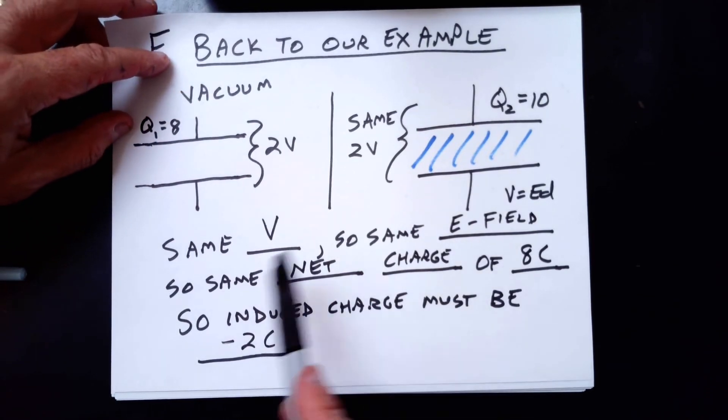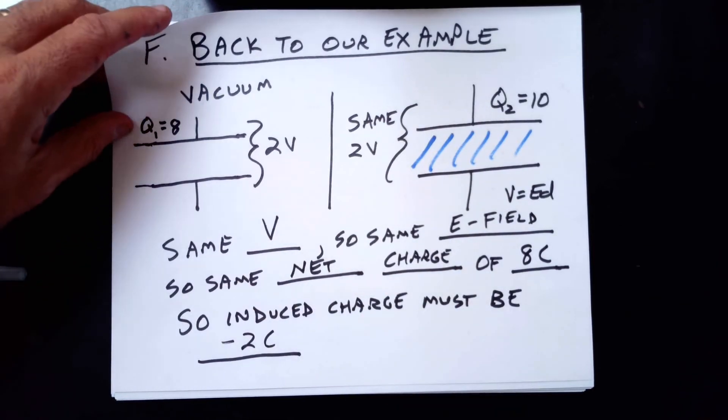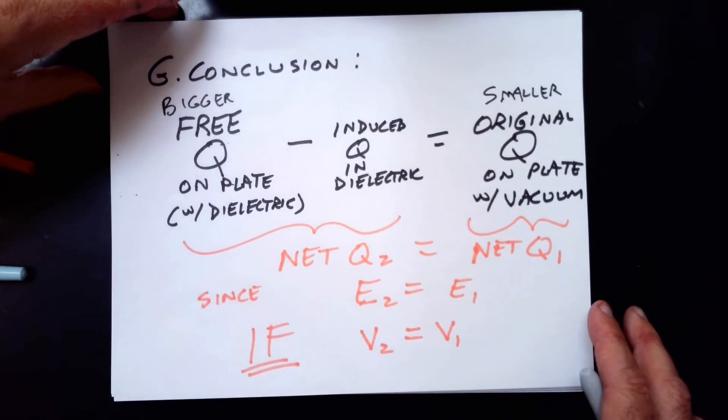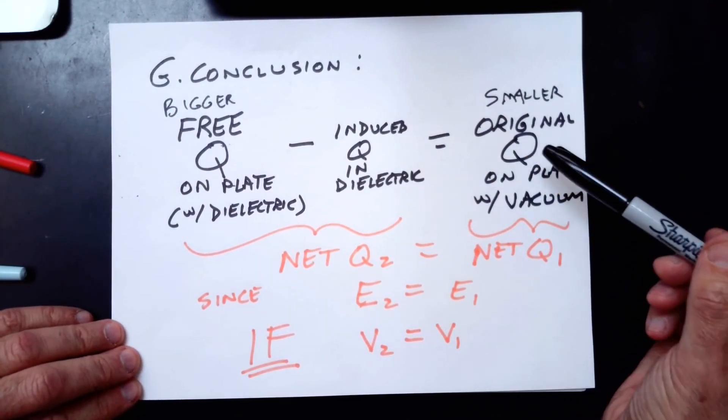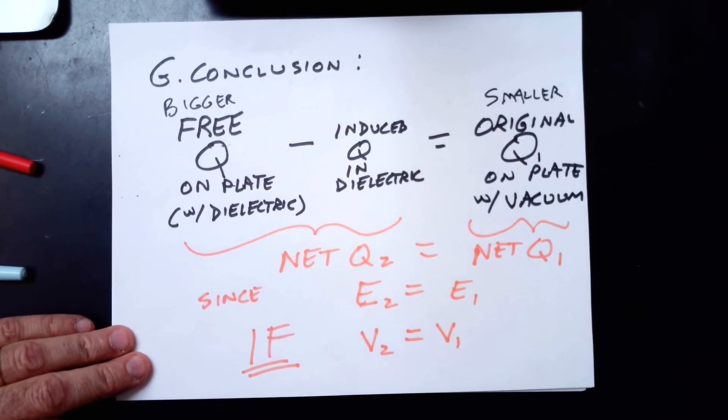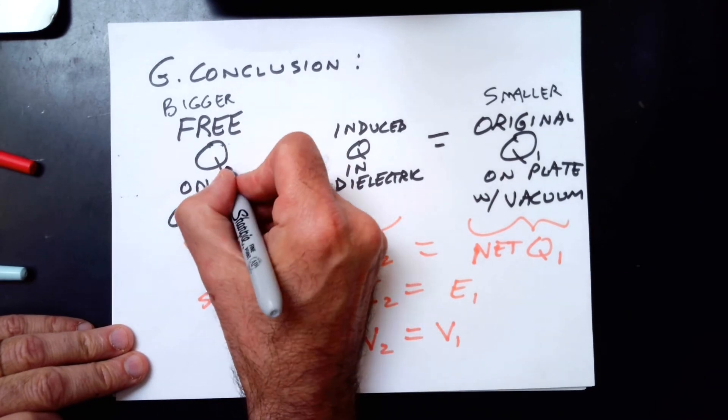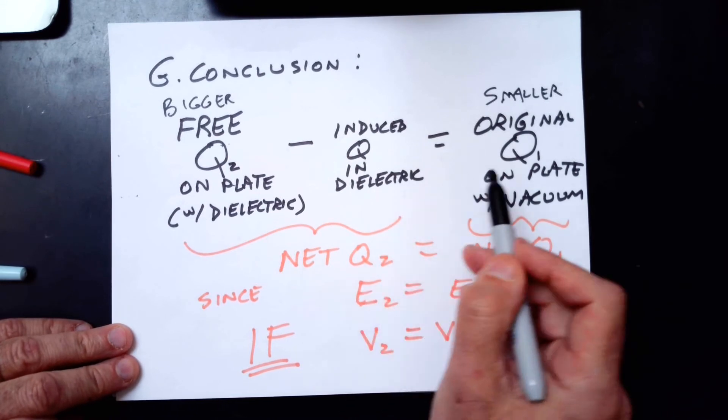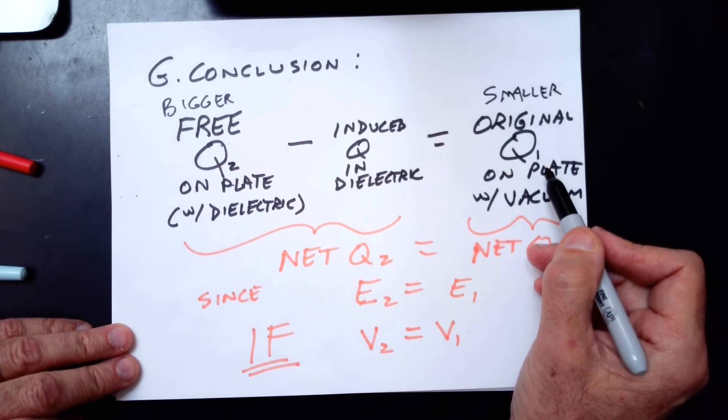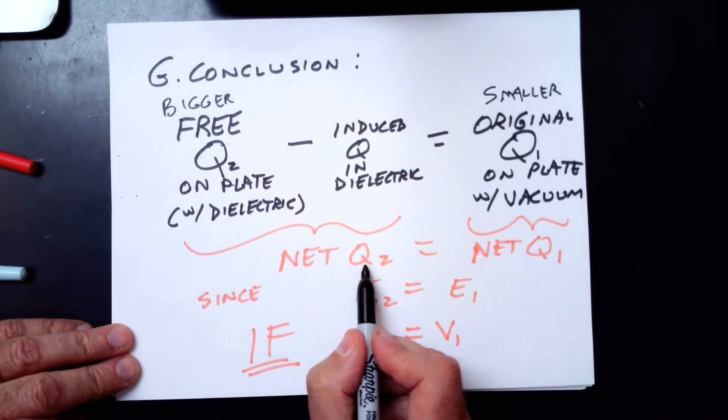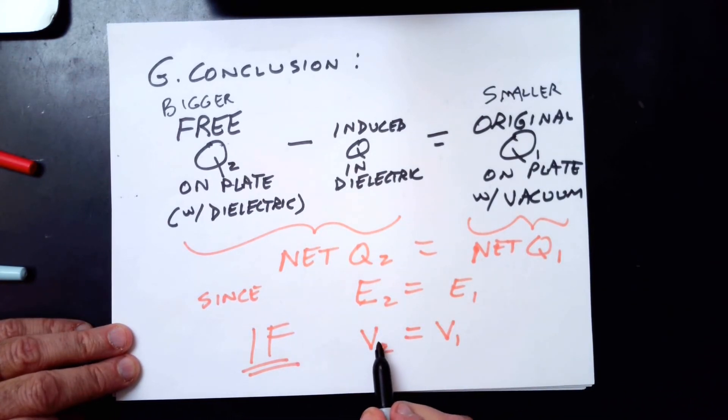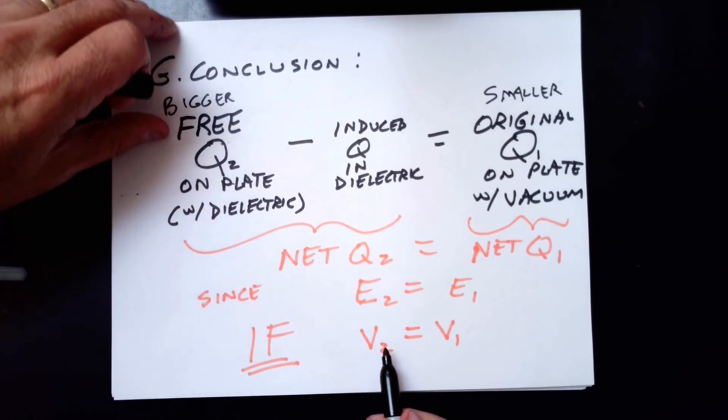By the way, this is not the way I do it in the solutions for one of the problems. I think this way is easier to understand. In the solutions, I use Gauss's law. You don't have to do that. So here's the conclusion written as a sort of equation. Here's what we started with, the original Q1. The bigger free charge Q2 on the plate that you actually see on the charge minus the induced charge that's in the dielectric equals that original charge you started with when there was no dielectric or vacuum. You could say, and that's because the net Q is the same in both cases. Since the electric field is the same in both cases, if the capacitor is hooked up to a constant voltage, if we're keeping the voltage of the capacitor the same.